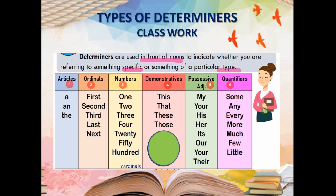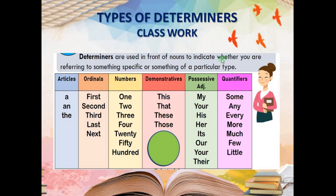Now this is the classwork. First of all, you have to write down the definition, and after that, you have to make this table — as creatively as you can. Now, one by one, we will read. Here I have given you one exercise: underline the determiners and state their kind. Whatever we have done — six kinds — both you have to do it.